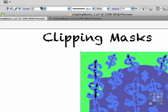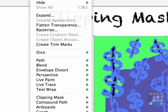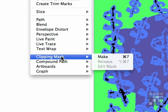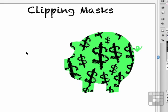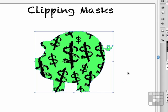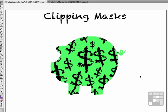Next step: go to the word Object on the pull-down menu and go down to Clipping Mask > Make. And there you go — you've got a piggy with some dollar signs in it. It didn't distort the dollar signs; it only conformed the shape to fit the shape of the pig. You're thinking it's pretty easy and you can maybe see some ways you might want to use that — but let me show you another way you can apply it.